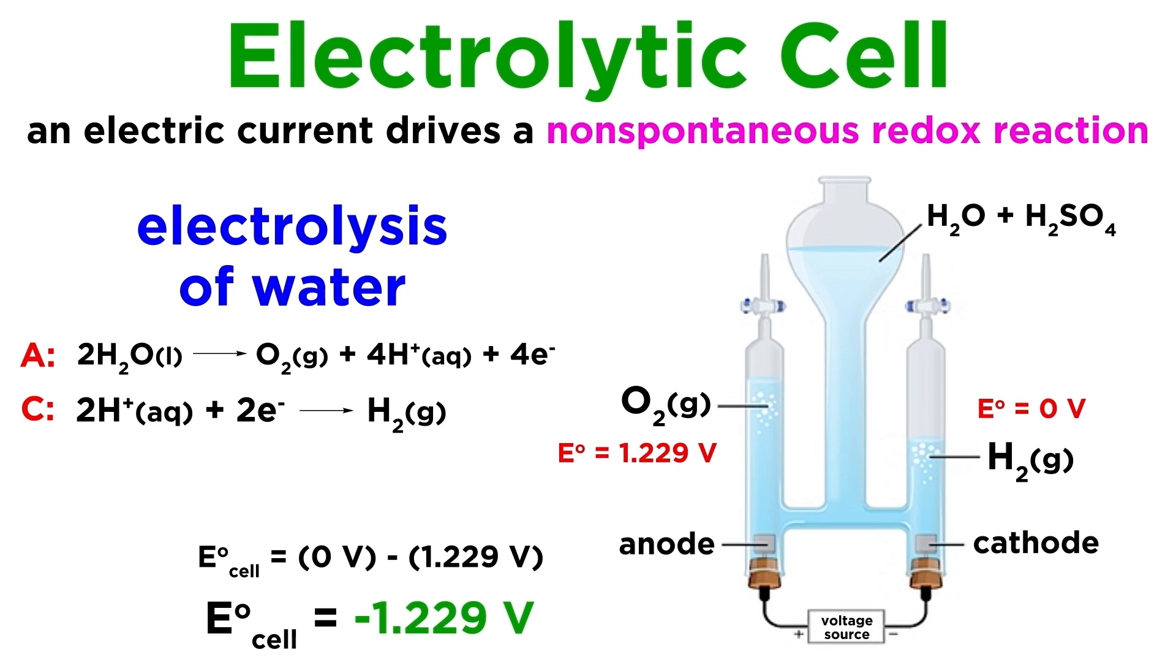We can see that the cell potential is negative 1.229 volts, which means that the minimum voltage that must be applied to this electrolytic cell in order to drive the reaction will be 1.229 volts.